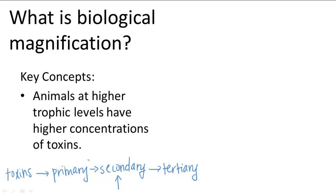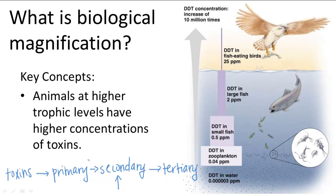Here's a famous example to illustrate the process. DDT is an insecticide that was very popularly used after World War II. When people sprayed DDT onto their lawns and in their gardens, some of it would run off into the water system with the rain. Once in the water, DDT would end up being consumed by the zooplankton.